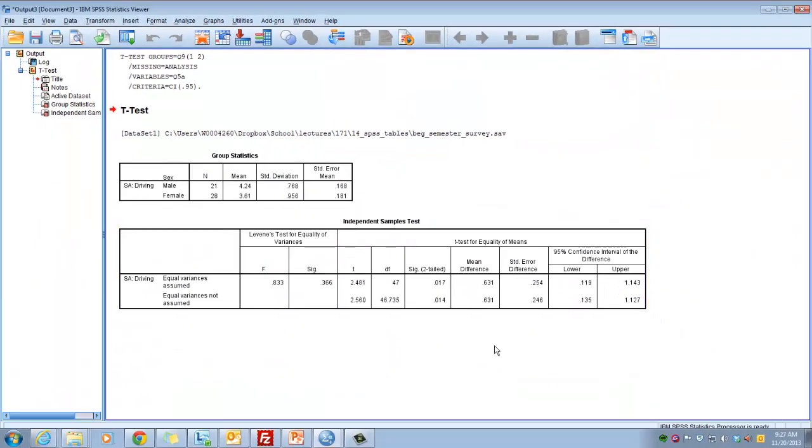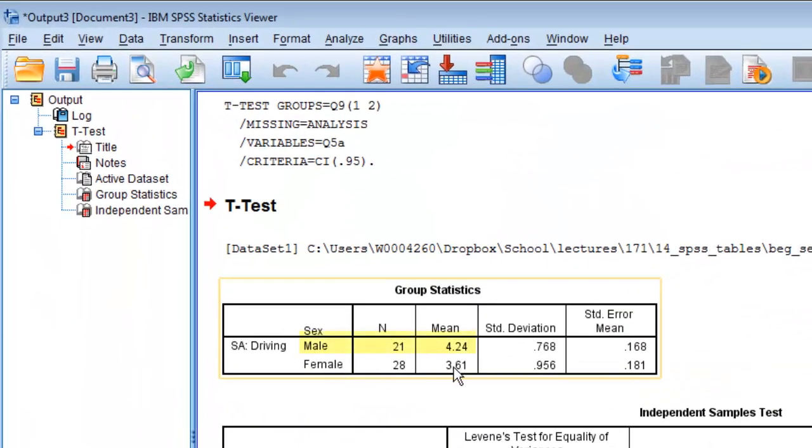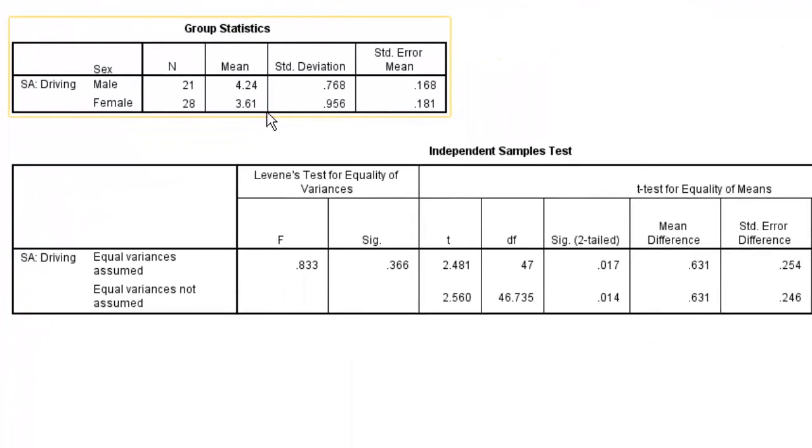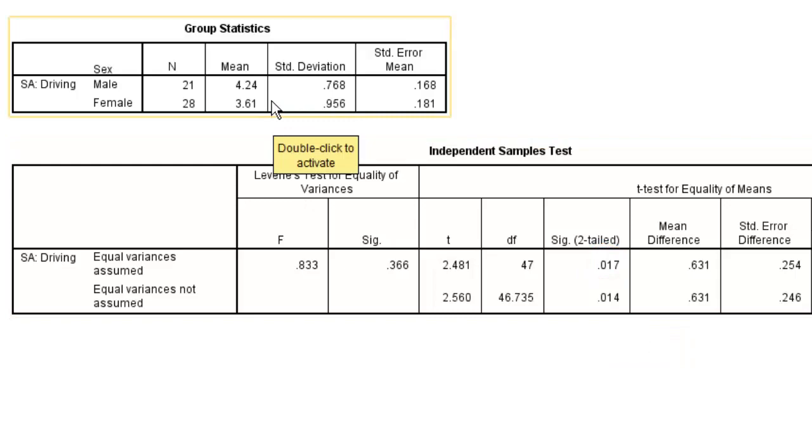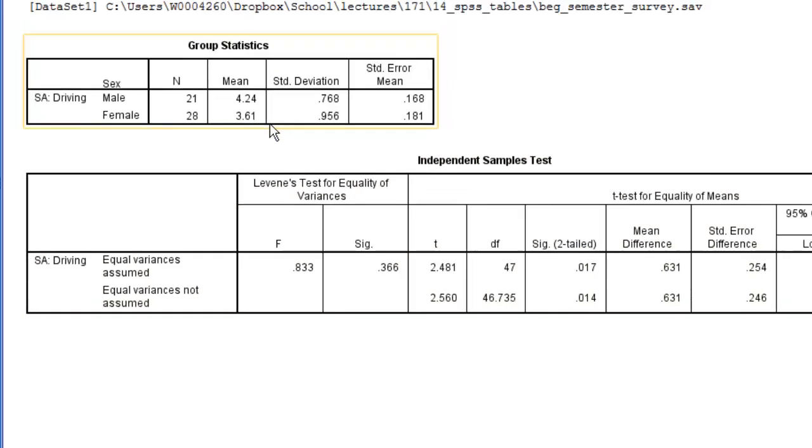And here is our independent samples T-test. You can see that the mean for males is 4.24, and the mean for females is 3.61. So now we know what the different means are for the two groups. The question is, are those statistically significant? For that, we come over here in the second table, and under significance two-tailed, you look here to determine whether there's anything less than 0.05. And as you can see, yes, there is a statistically significant difference. So we can say that men are more likely to rate their driving as better than average than women are.